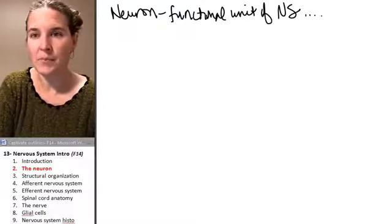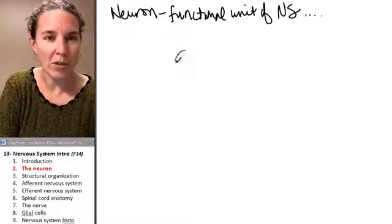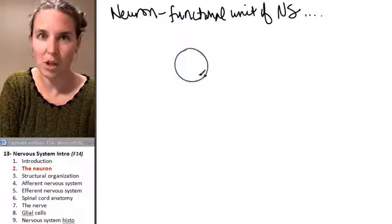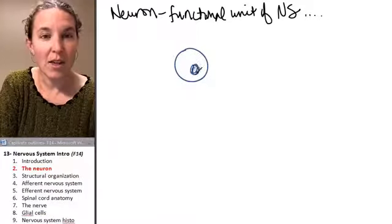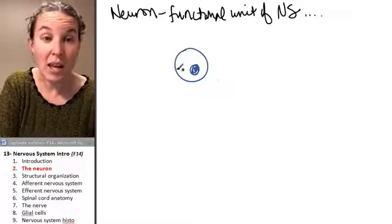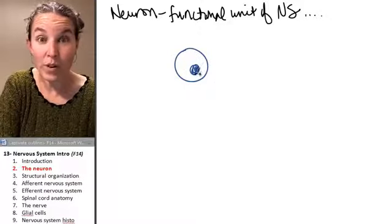Well, let's draw a picture of a neuron. What? Me? Draw a picture? Shocking. A neuron is a cell, so it has a cell body with a nucleus.